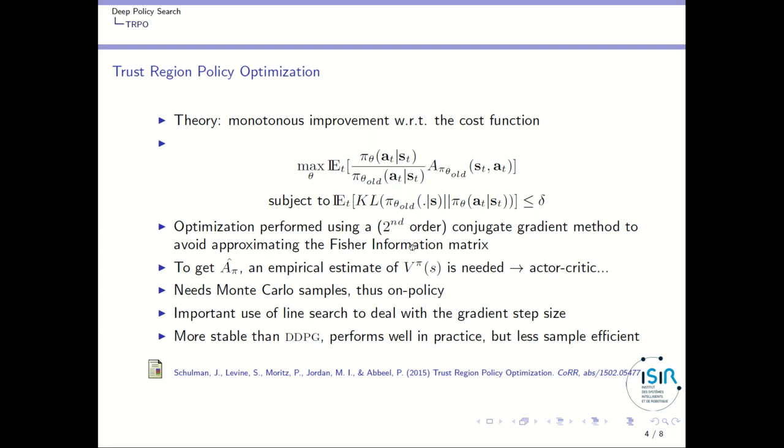This allows you to perform this computation without having to approximate a Fisher information matrix. Given that the Fisher information matrix is of the size of the policy parameters, and if your policy is a deep neural network, your vector of parameters is very large. So you have a huge matrix and you cannot afford to compute this Fisher information matrix. So the conjugate gradient method is a technique that allows you to avoid this very expensive computation.